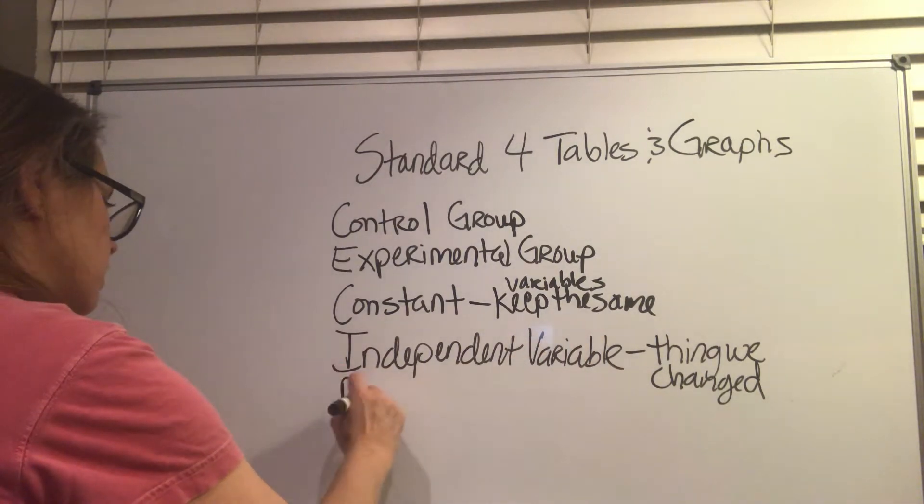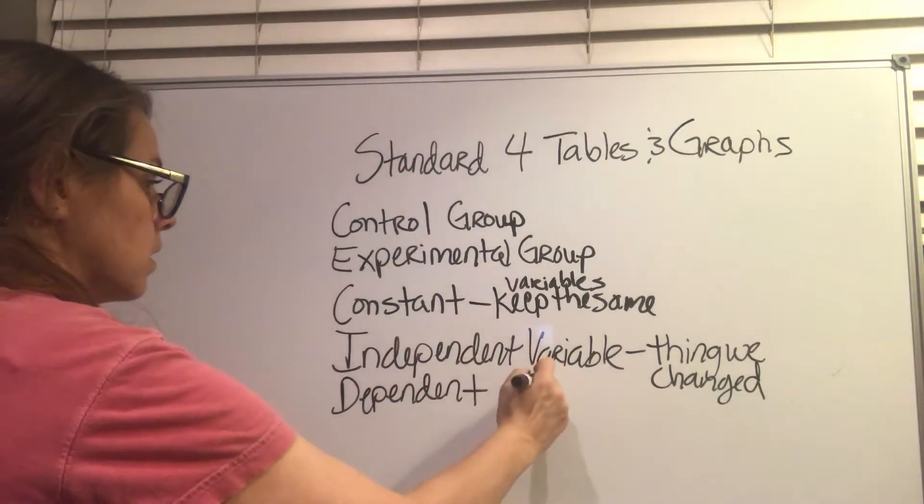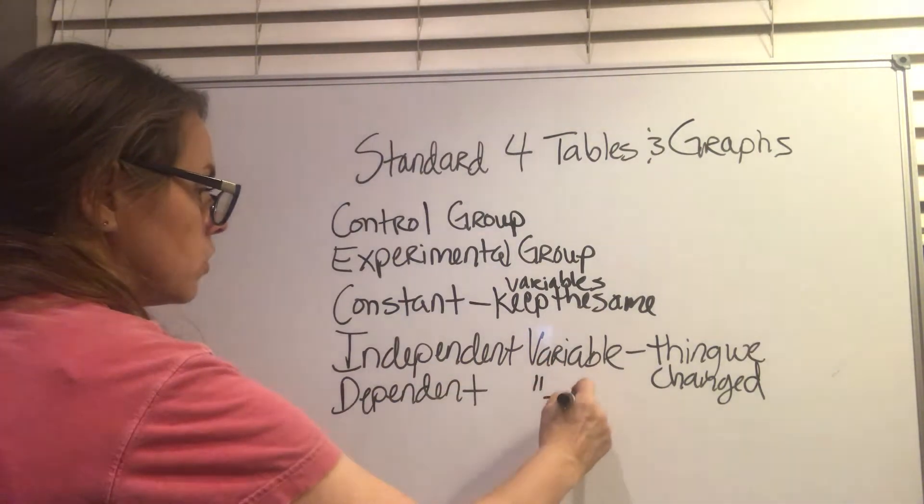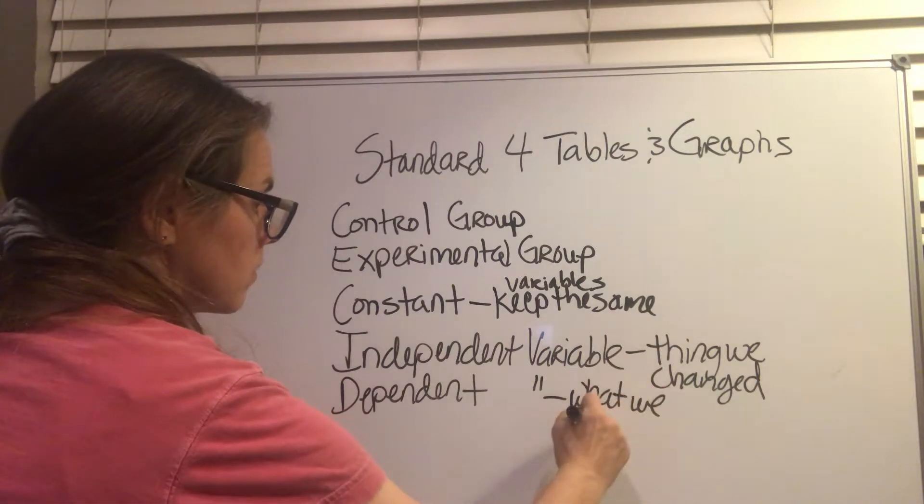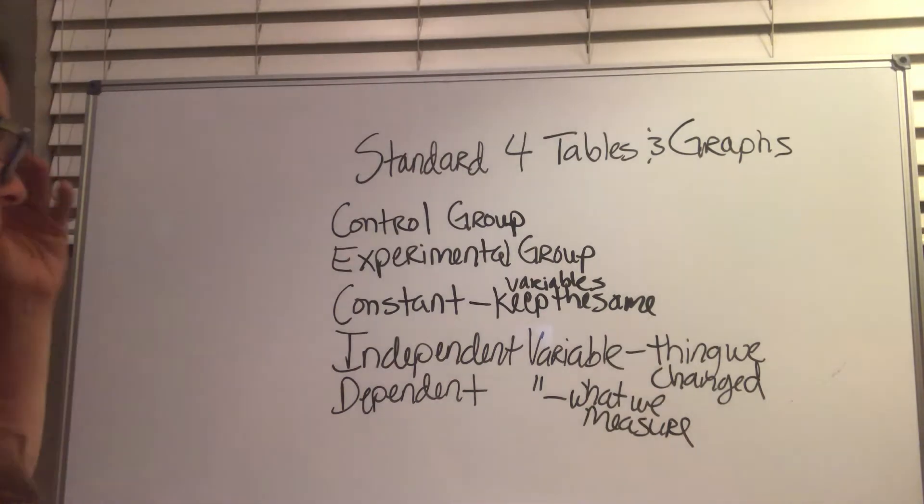The dependent variable is what we measure. So in that plant experiment, what we measured would have been the mass of the plant. Did it increase over time?